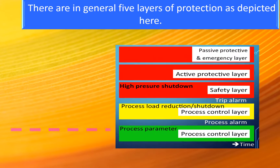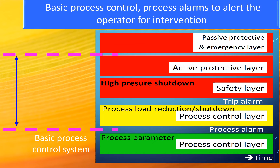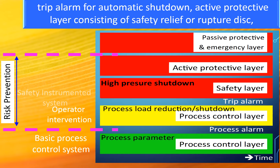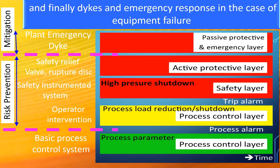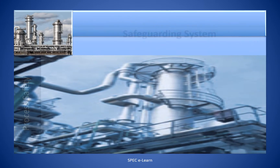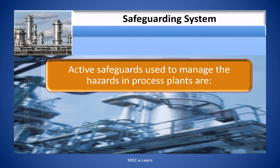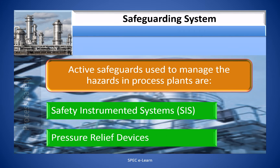There are, in general, five layers of protection: process control; process alarms to alert the operator for intervention; trip alarms for automatic shutdown action; active protective layers consisting of safety relief valves or rupture discs; and finally, directed emergency response in the case of equipment failure. The active safeguards used to manage hazards in a process plant are the Safety Instrumented System and pressure relief devices.